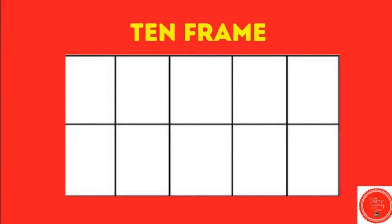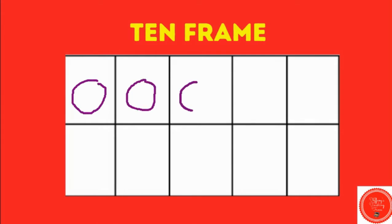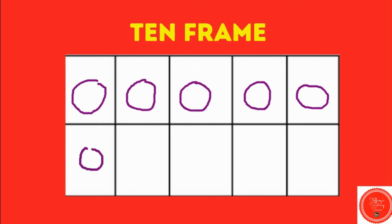Let's take a look at this ten frame. To fill in a ten frame for the number seven, we're going to draw seven circles. We have one, two, three, four, five, six, seven. So this is what the ten frame for seven looks like.